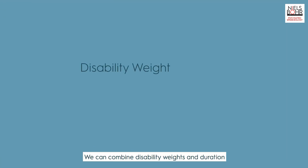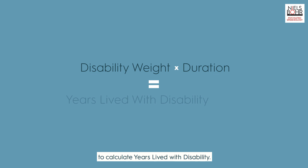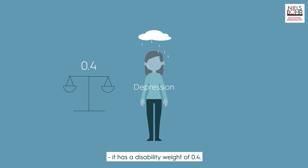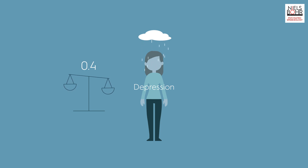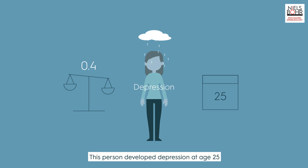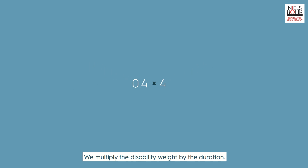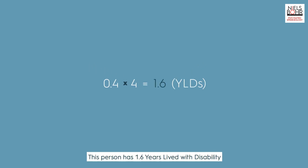We can combine disability weights and duration to calculate years lived with disability. For example, here we see someone with a type of depression. It has a disability weight of 0.4. This person developed depression at age 25 and recovered at age 29 — the duration of this episode was four years. We multiply the disability weight by the duration: this person has 1.6 years lived with disability related to depression.